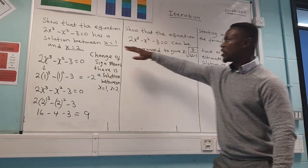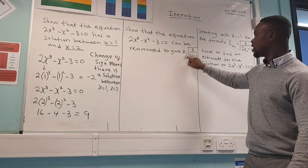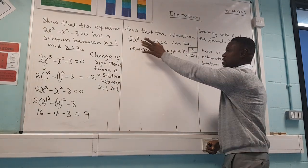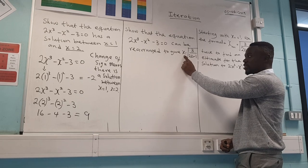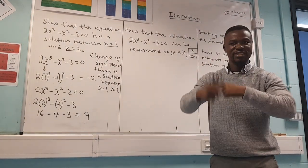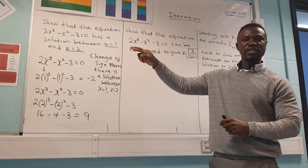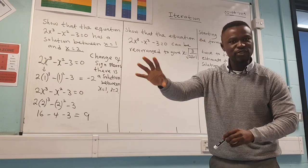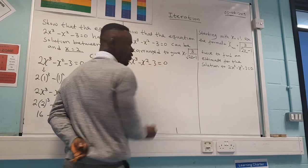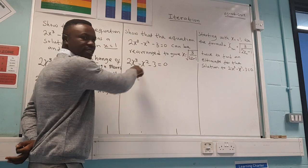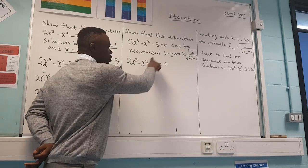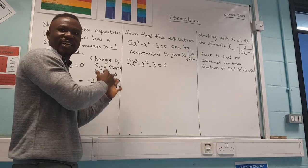Part B says: show that this equation can be rearranged to give the iterative formula. They've given you the answer and want you to show how you get there. We want x on its own, so we go back to factorizing — meaning we look at the equation and bring out the highest common factor.